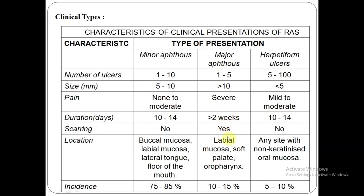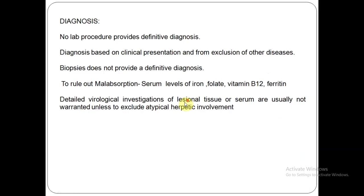Regarding scarring, major apthous ulcers heal with scarring, whereas the other two variants do not form scars. The location is almost similar — usually the labial or soft palate region or non-keratinized mucosa. Minor apthous ulcers are by far the most commonly seen variant compared to major or herpetiform. Diagnosis doesn't actually require a particular lab procedure; it is a diagnosis of exclusion — you rule out all the other conditions and then zero in on apthous ulcers.